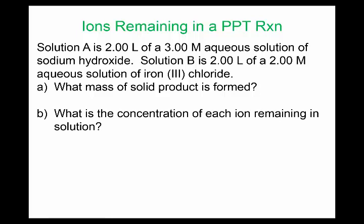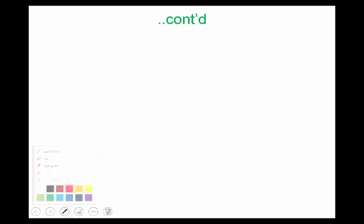The questions are: what mass of solid product is formed, and what is the concentration of each ion remaining in solution? I'm going to write out some steps. I made the conscious choice to work with the net ionic equation in solving this problem — I think it's a lot clearer this way. You could do this with the full molecular equation and I wouldn't mark anything wrong, but I really think it's clearer if we stick with the net ionic.